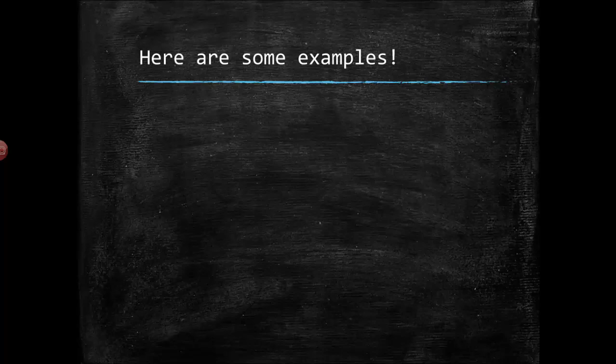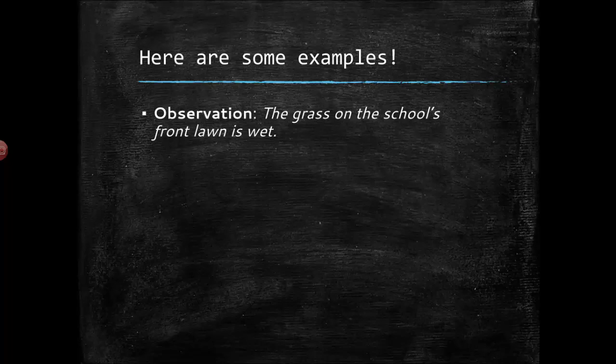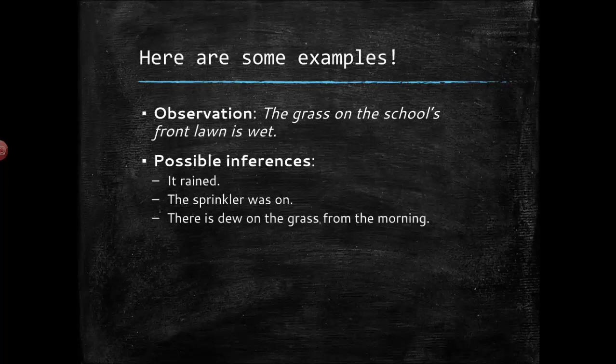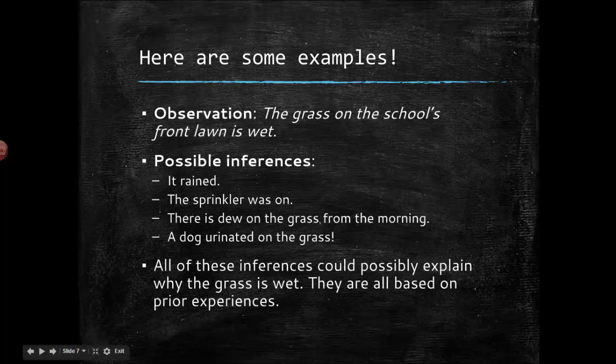So here's some examples we can talk about. Here's the first. An observation. You make an observation that the grass on the school's front lawn is wet. So what are some possible inferences we can make from that? In other words explain why is it wet. Well maybe it rained. Sure. Okay. Maybe the sprinkler was on. Great. That would explain why the grass was wet. Maybe there's dew on the grass in the morning. You know especially in the spring and fall we get that after a cold night. Or maybe a dog urinated on the grass. Ew. But possible. Right? All of these things are based on prior experiences. Things that you know already. Those are inferences.